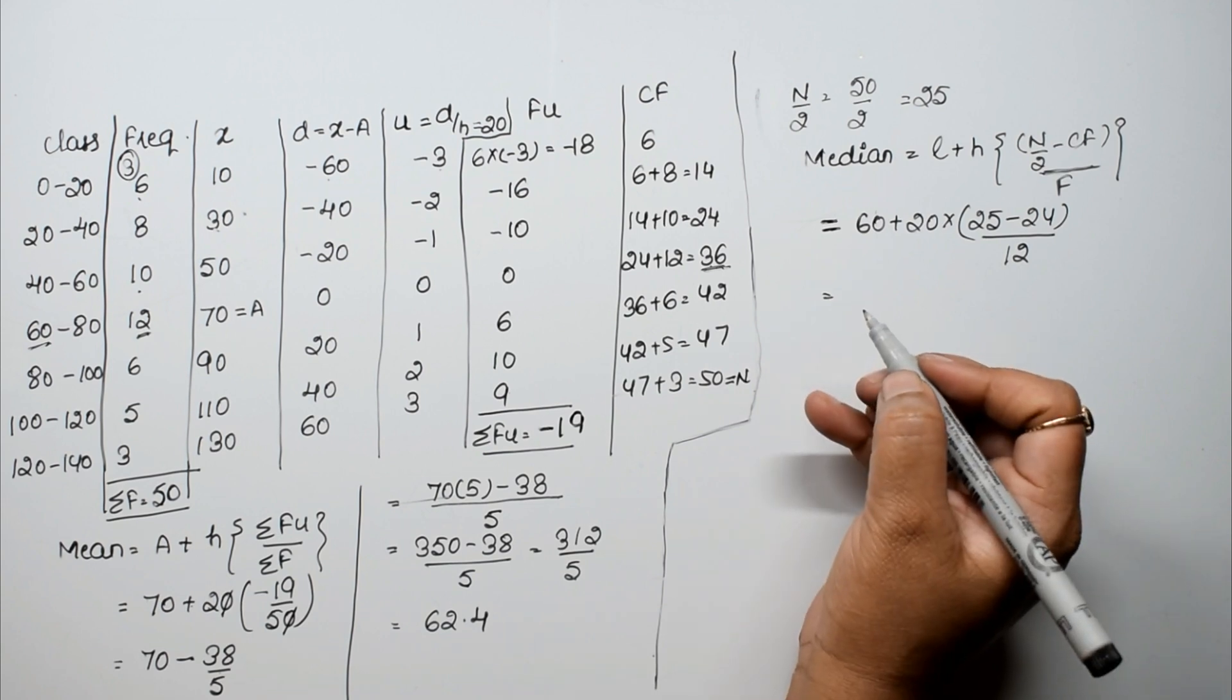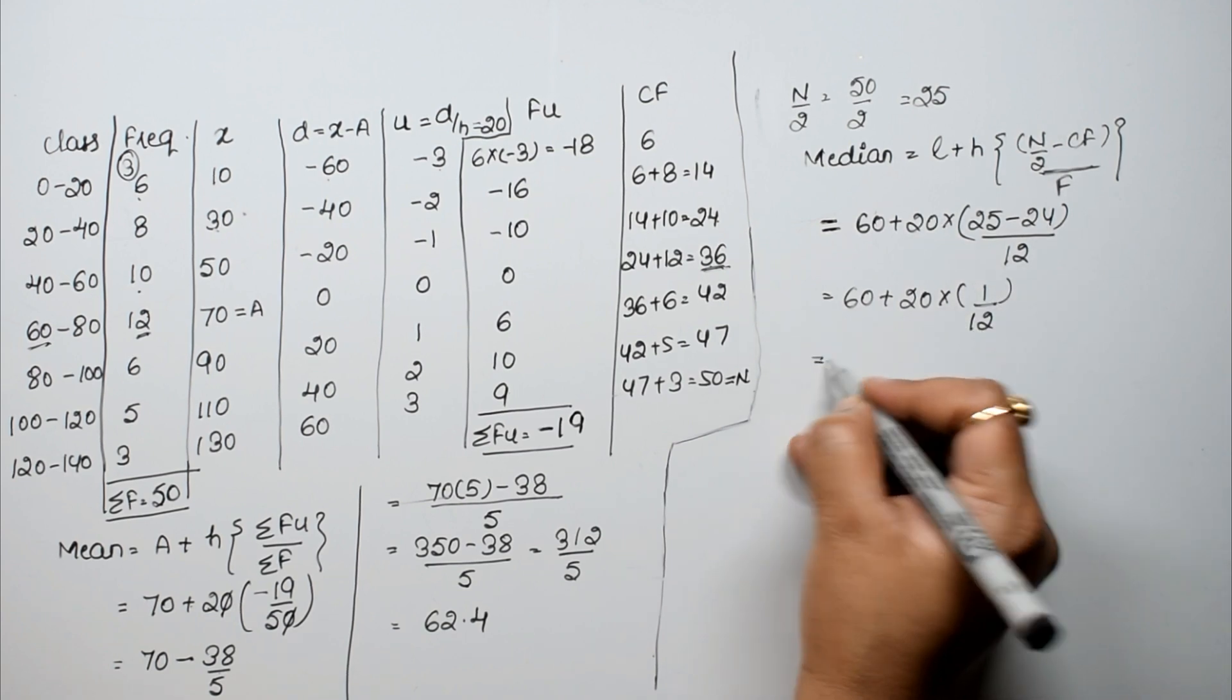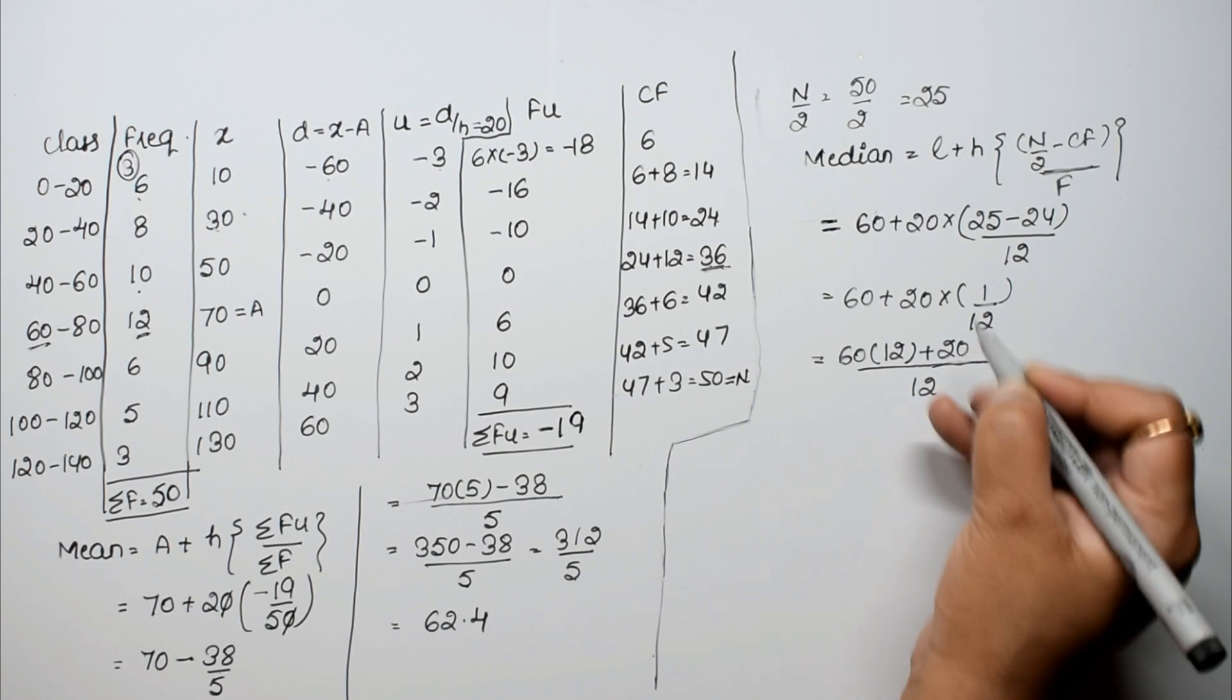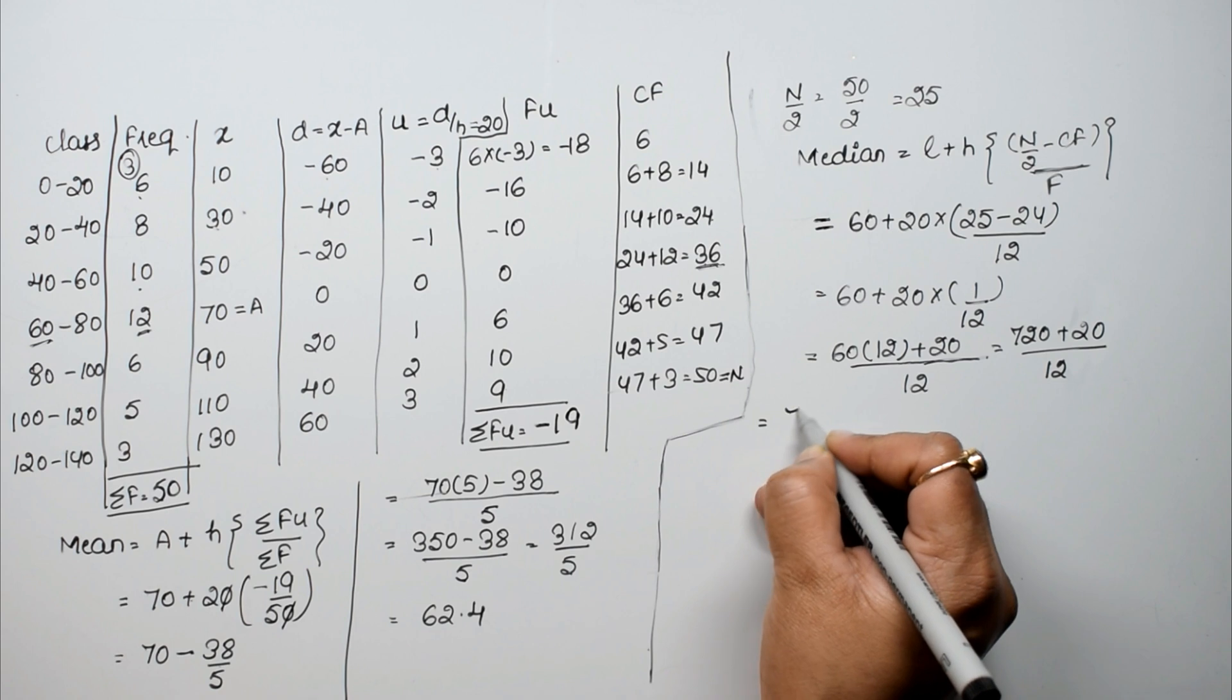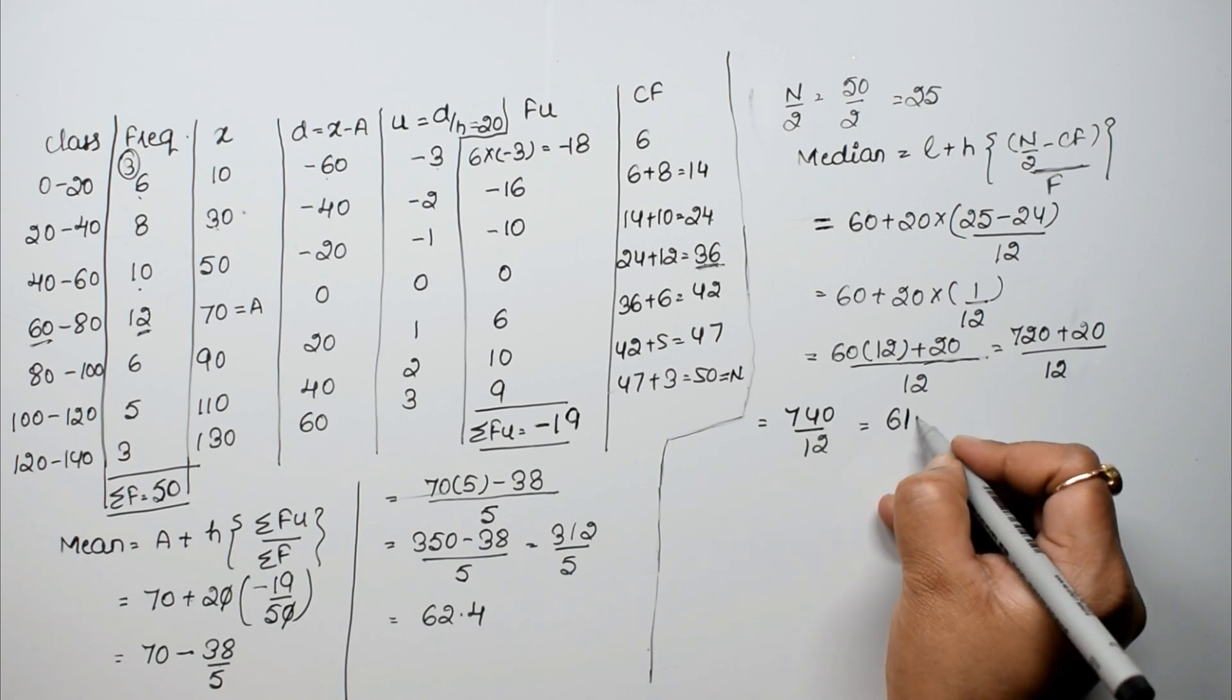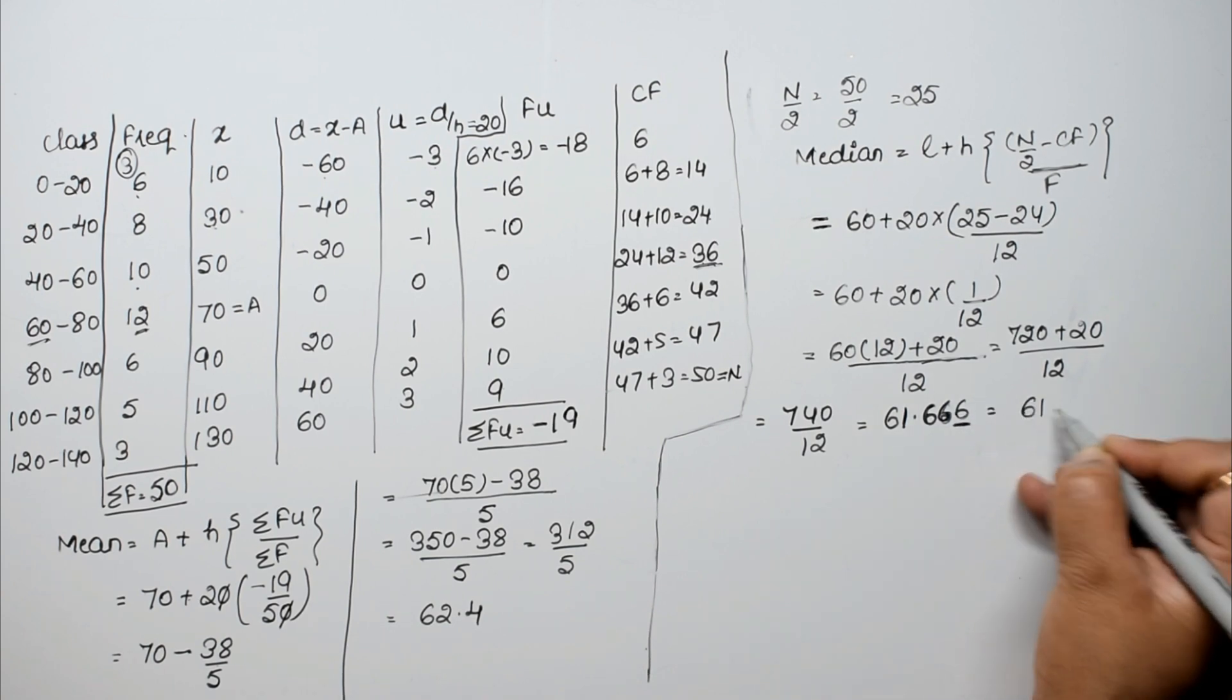Right, agar aap ko naa samaj aaya hai, toh please 18b exercise dekhiye iske liye. 60 plus 20 into 1 by 12. LCM liya. 60 into 12 plus 20, that is 720 plus 20 upon 12, that is 740 upon 12. Divide karte hai 12 se. 12, 6 into 72, 20 ho gya. 12 once is 12, point lag gya, 80 ho gya. 6 into 72. Toh isko kya likh sakte hain? 61.67 likh sakte hain.